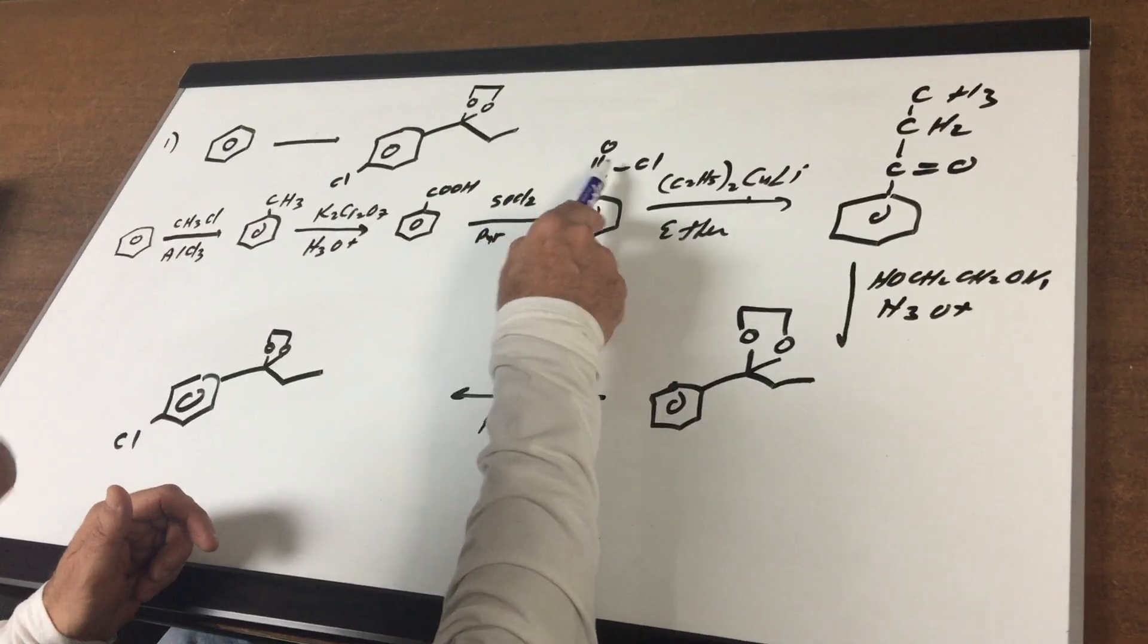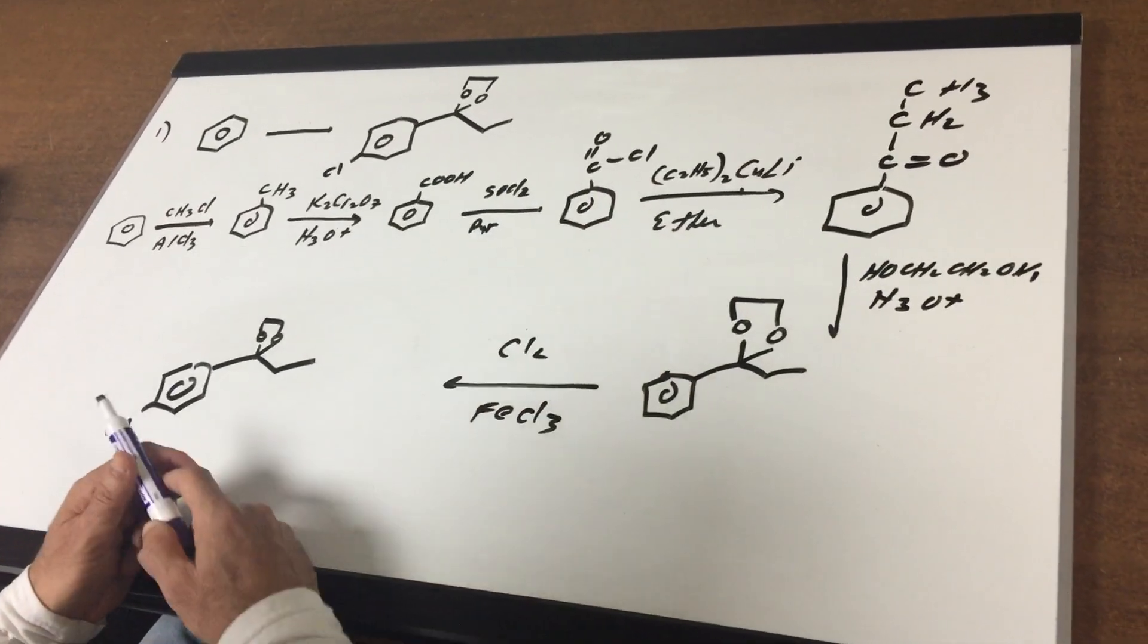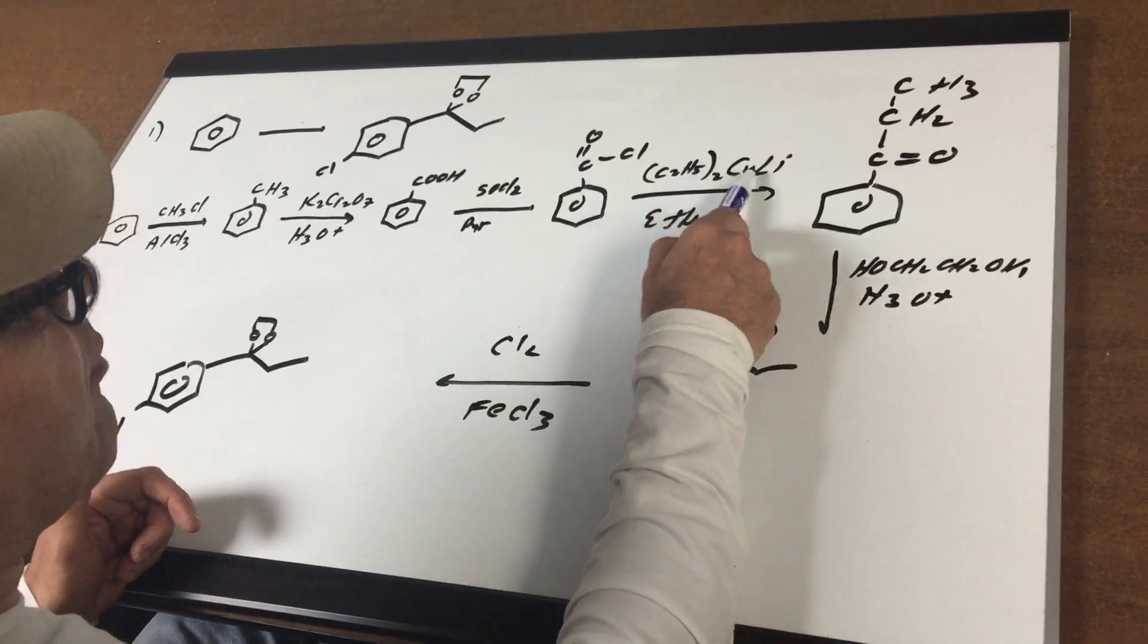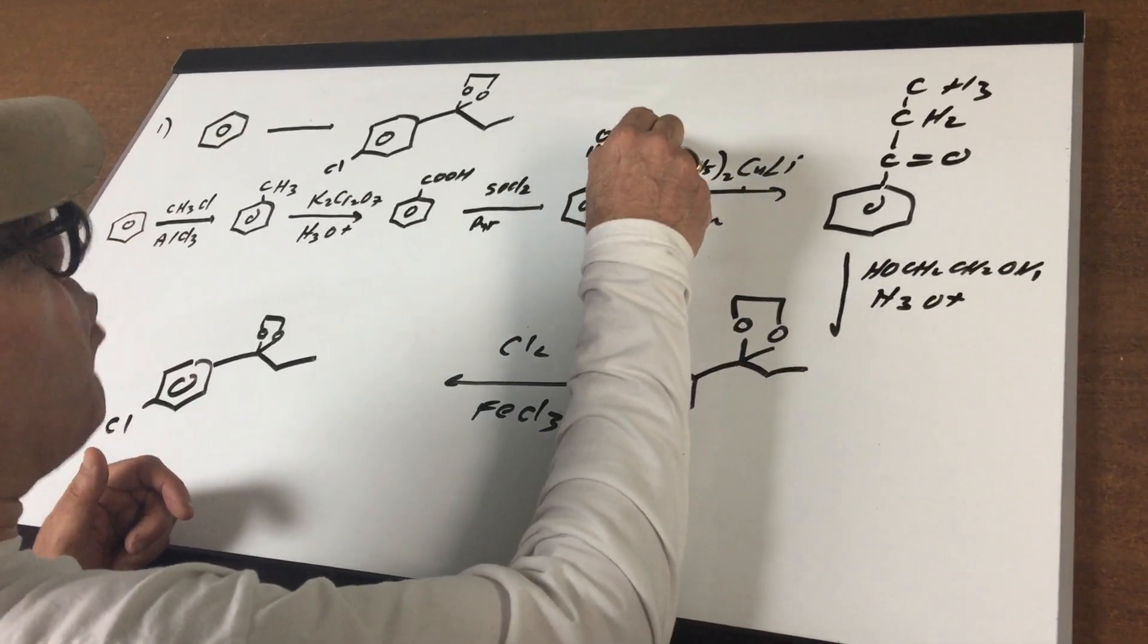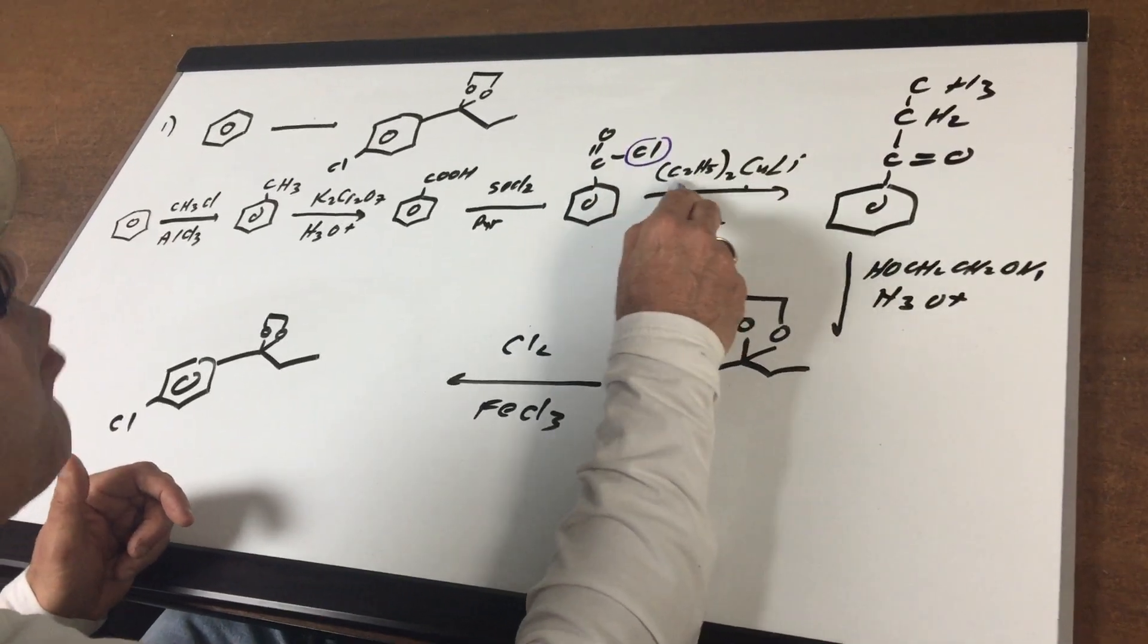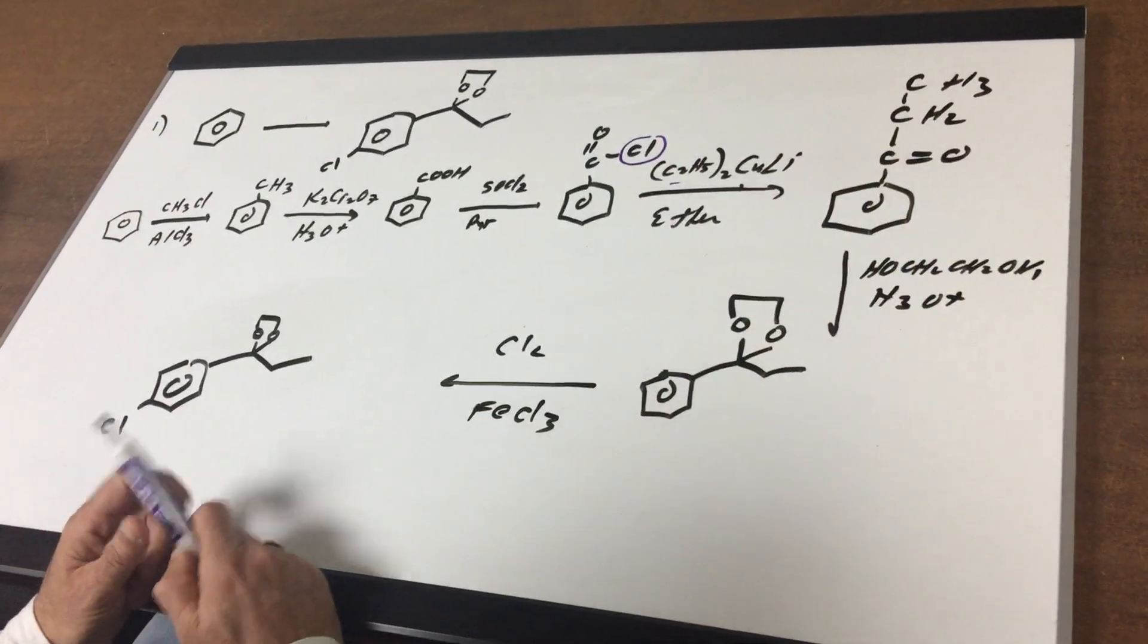I added SOCl2 to create an acyl halide. And then I did what's called the Friedel-Crafts reaction in which I substitute the Cl for one of the ethyls. That's a key reaction for the DAT.